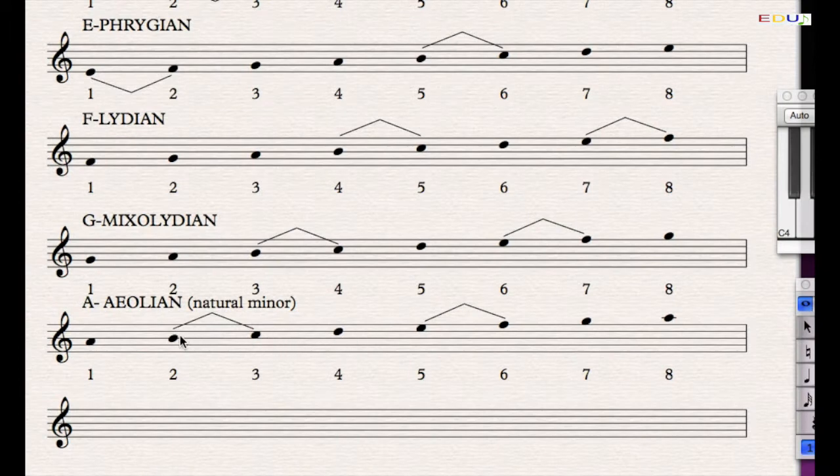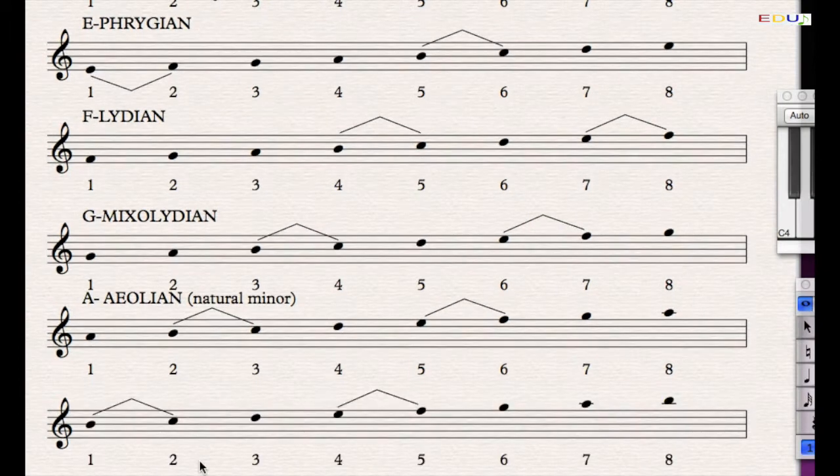Last but not least, let's go from B to B. If we do this, we find the semitone steps between tone 1 and 2 and tone 4 and 5. This scale is called Locrian. B Locrian.